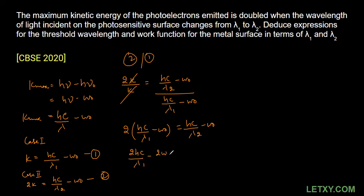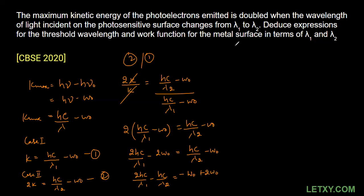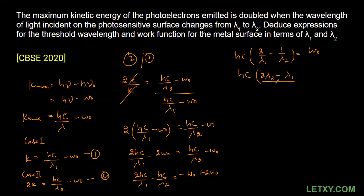So we have 2hc/λ₁ − 2W₀ = hc/λ₂ − W₀. Moving hc/λ₂ to the left side and W₀ terms to the right side: 2hc/λ₁ − hc/λ₂ = 2W₀ − W₀ = W₀. Taking hc common on the left side: hc(2/λ₁ − 1/λ₂) = W₀. Taking the LCM gives: hc · (2λ₂ − λ₁) / (λ₁λ₂) = W₀.